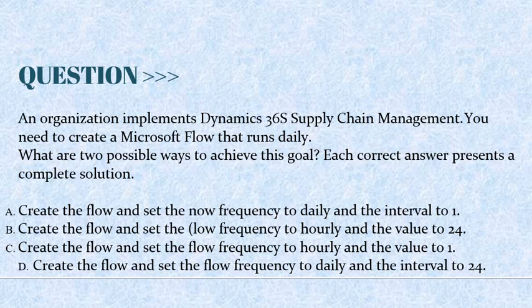Option B: create the flow and set the flow frequency to hourly and the value to 24. Option C: create the flow and set the flow frequency to hourly and the value to 1. Option D: create the flow and set the flow frequency to daily and the interval to 24. The correct answers are Option A and D.